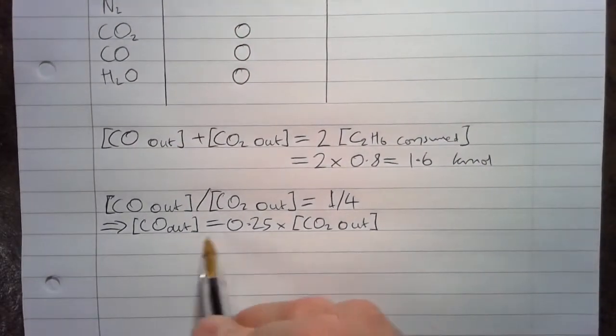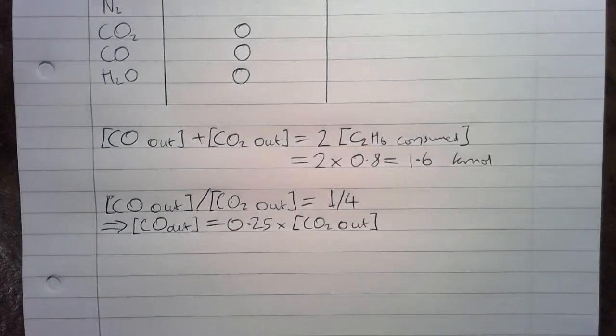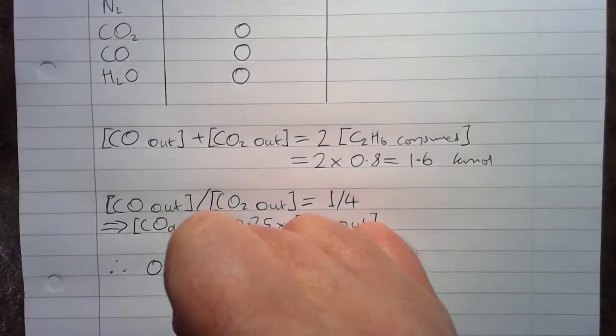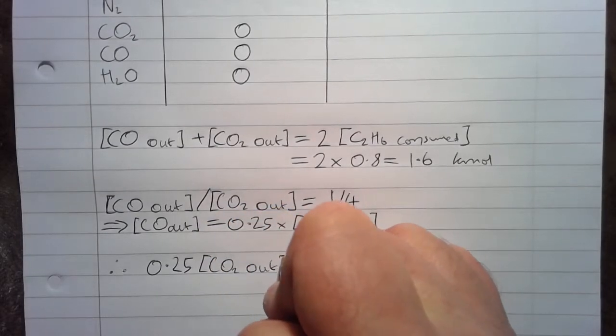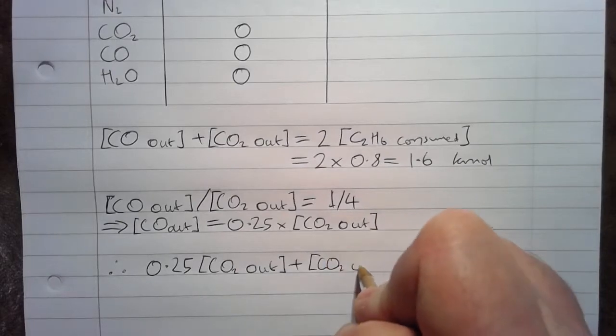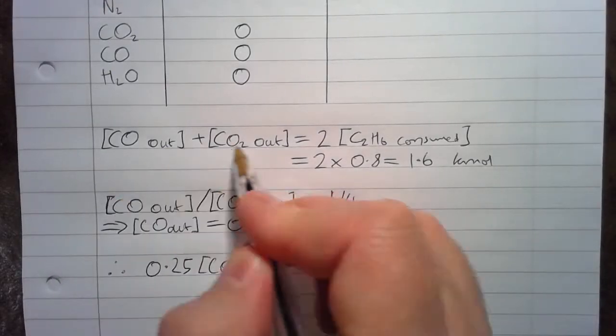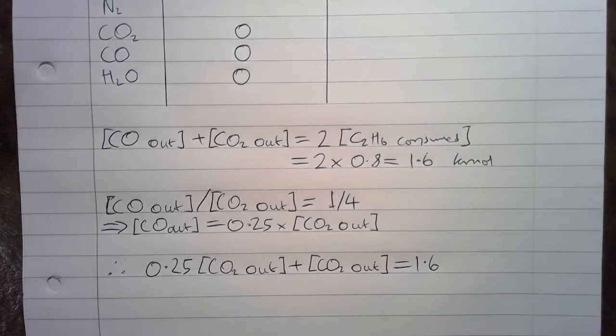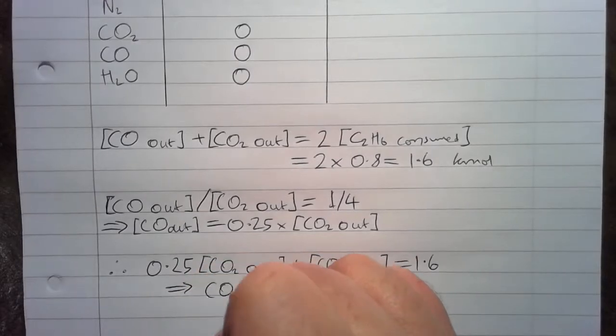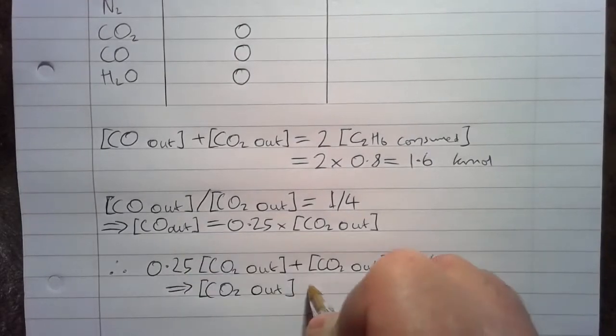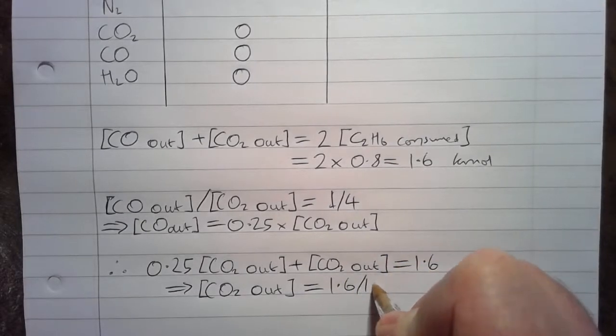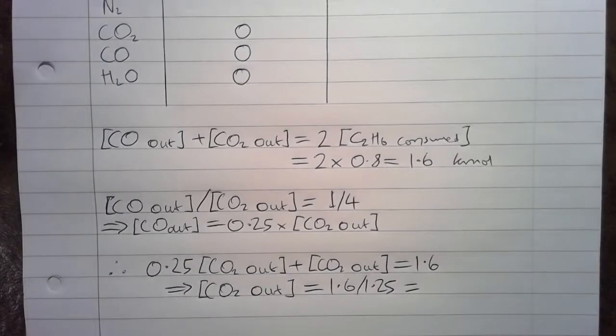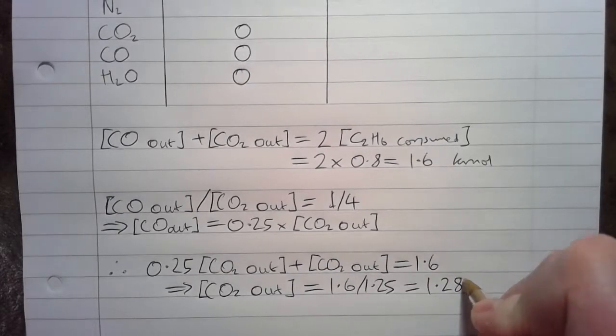And if we substitute this information into the equation up here, we can then solve for the two unknowns that we've got. So therefore, 0.25 CO2 out plus CO2 out, that's just substituting in from this equation up here, equals 1.6. And we can rearrange this. So CO2 out equals 1.6 divided by 1.25, and that equals overall 1.28 K moles.